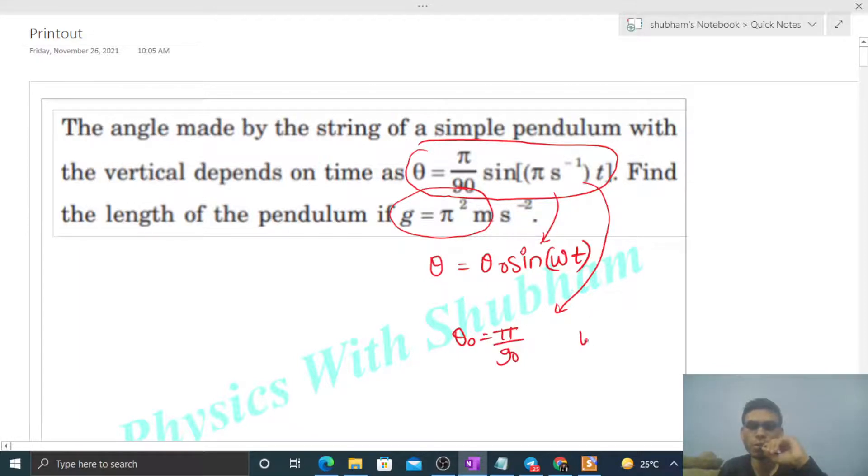We can find the time period of this angular SHM. That will be 2pi by omega, which is 2pi divided by omega's value of pi, so that equals 2. The time period of this simple pendulum is 2 seconds.